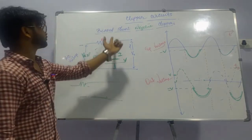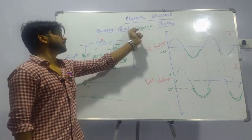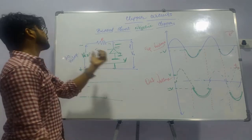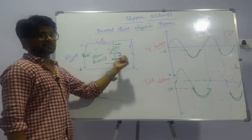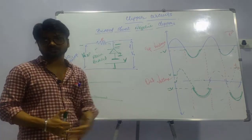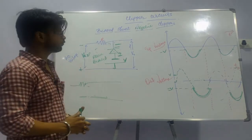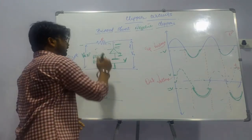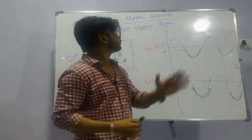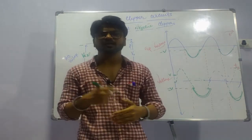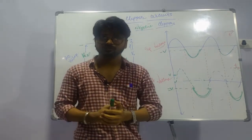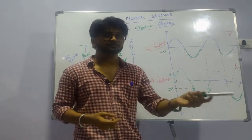This is the explanation of the bias shunt negative clipper under negative bias condition. We have discussed all the clipper circuits. In the next class we'll be discussing different aspects of clamper circuits and some clipper circuit applications.